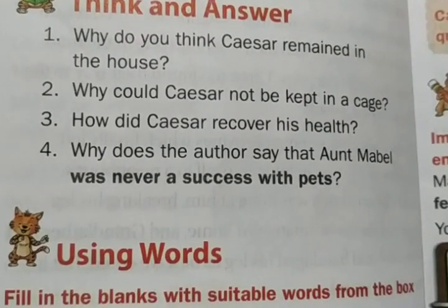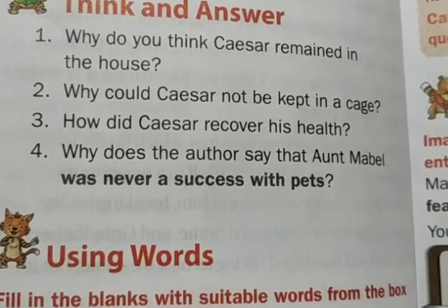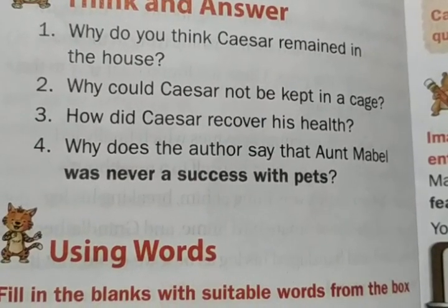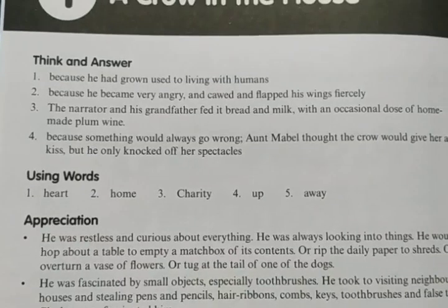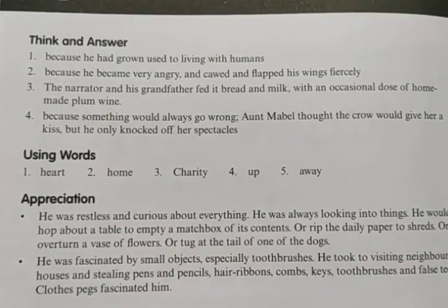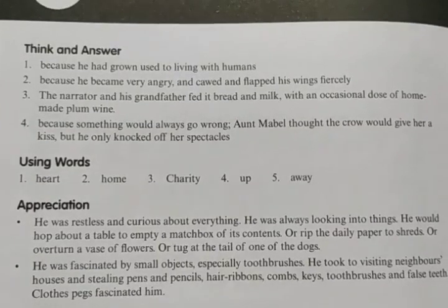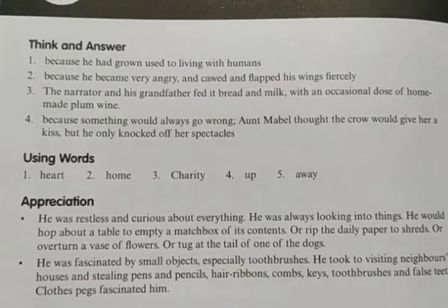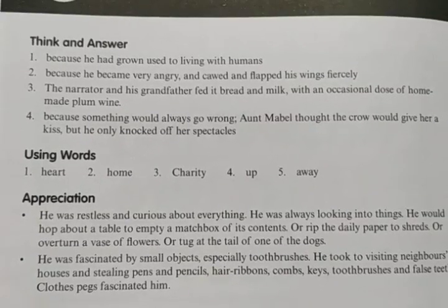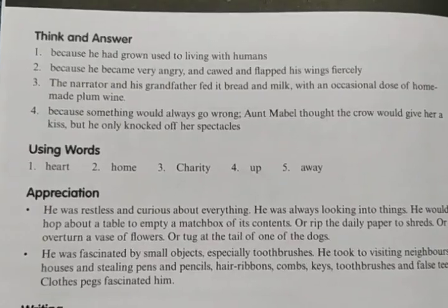The next question is: why does the author say that Aunt Mabel was never a success with pets? The answer is: because something would always go wrong. Mabel thought the crow would give her a kiss, but he only knocked off her spectacles. These are the answers for the 'Think and Answer' section.